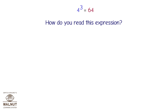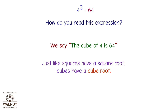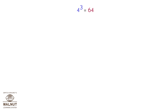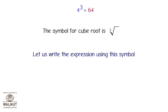How do you read this expression? We say, the cube of 4 is 64. Just like squares have a square root, cubes have a cube root. In this case, we can say the cube root of 64 is 4. The cube of 4 is equal to 64. The symbol for cube root is this. Let us write the expression using this symbol. So, the cube root of 64 is equal to 4.